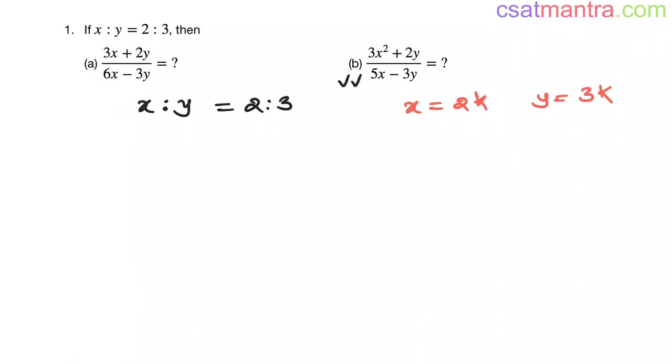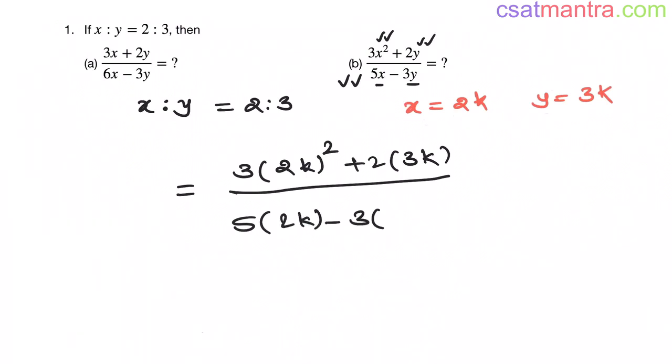Now let us look at this problem. Power of x is 2 here, power of y is 1 here; power of x is 1 here, power of y is 1 here. Now let us see this: 3×(x=2k), 2k whole squared plus 2×(y=3k), by 5×(x=2k) minus 3×(y=3k).